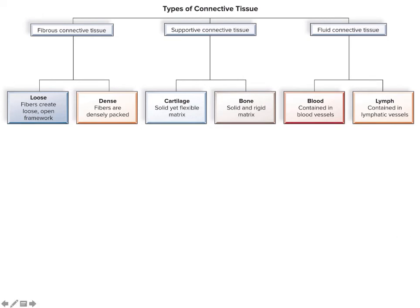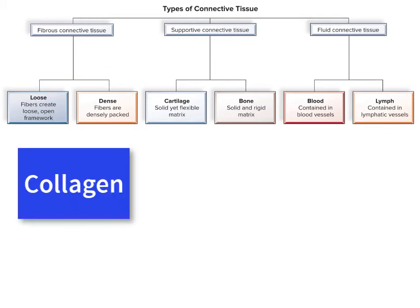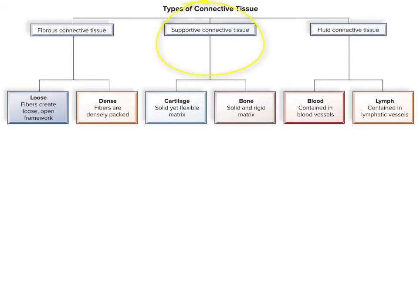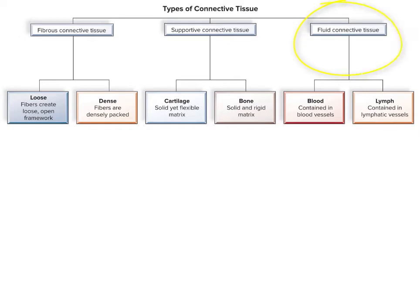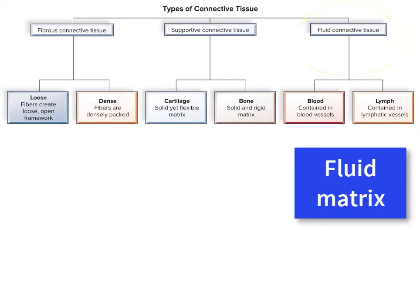First we have fibrous connective tissues. There are two different types of fibrous connective tissue, but both have a lot of collagen fibers so they're very strong. We then have supportive connective tissue, which includes cartilage and bone because they are quite solid and help to support the body. Our last category is fluid connective tissue, in which the matrix is completely fluid.